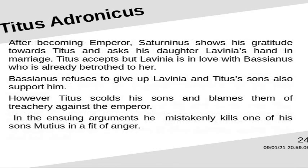After becoming emperor, Saturninus shows his gratitude towards Titus and asks for his daughter Lavinia's hand in marriage. Titus accepts, but Lavinia is in love with Bassianus, who is already betrothed to her. Bassianus refuses to give up Lavinia, and Titus's sons also support him. However, Titus scolds his sons and blames them of treachery against the emperor. In the ensuing arguments, he mistakenly kills one of his sons, Muteus, in a fit of anger.